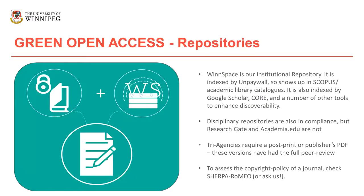Those two routes — going through a repository and going through journals — have their own names. We call going through repositories green open access, and we really encourage you to use WinSpace, our institutional repository. You can write this language into your grant as well, saying that you intend to deposit a copy with WinSpace. It's indexed by a powerful database called Unpaywall, which is used by things like Scopus and all kinds of academic library catalogs. That means an article from WinSpace can be seen in academic libraries all over the world. It's also indexed by Google Scholar, making it freely available and easy to find on the internet — a really big benefit for people not affiliated with an institution.